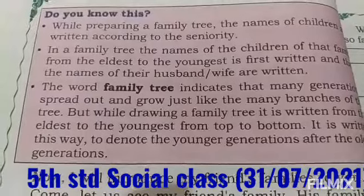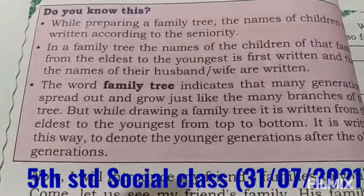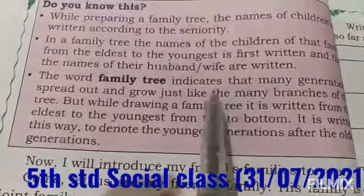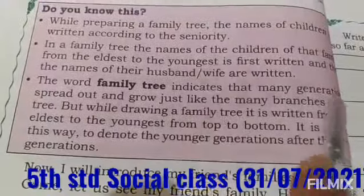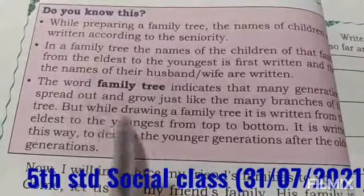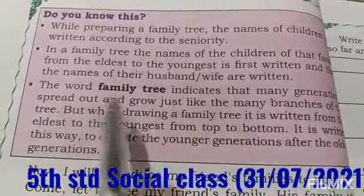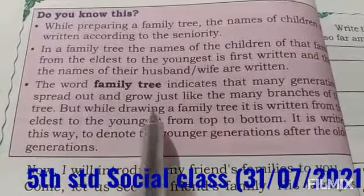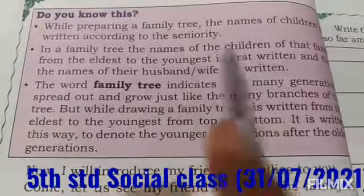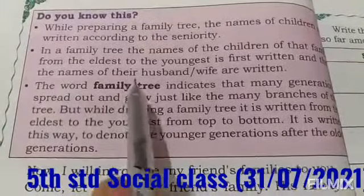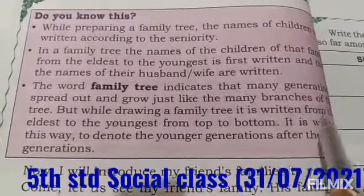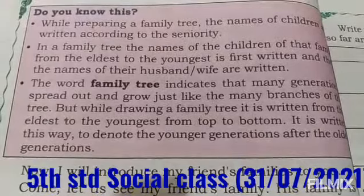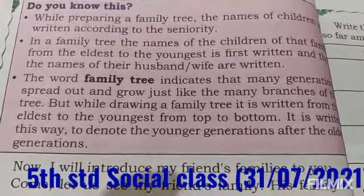The word 'family tree' indicates that many generations spread out and grow, just like the many branches of a tree. But while drawing a family tree, it is written from the eldest to the youngest, from top to bottom. So when you are drawing the family tree, you have to write from eldest to youngest, from top to bottom.